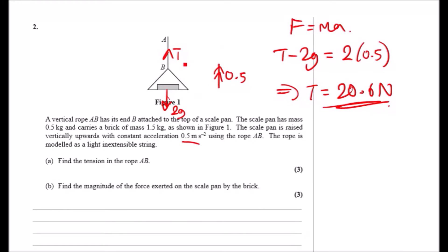Now before I clarify for part (b), you probably figured why I just combined it. Well, in this kind of question you could do it separately, but because we were resolving the whole system, you could just combine it in total. Now if we look at part (b), it's telling us to find the magnitude of the force exerted on the scale pan by the brick.